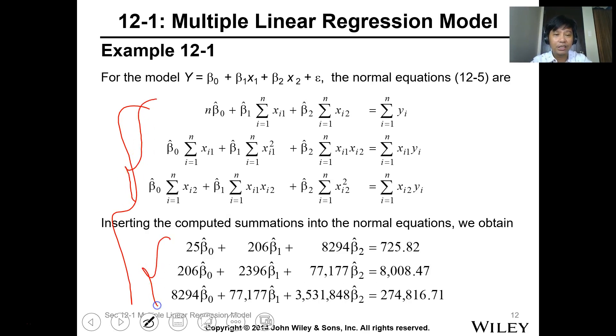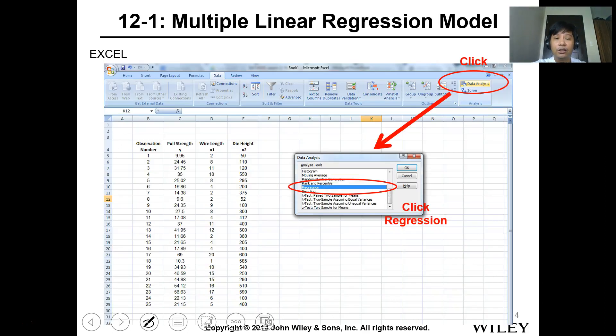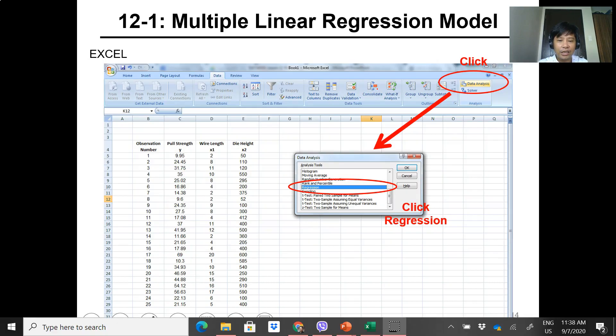You can input this into a programmable calculator, pero sa calculator I'm not sure with Casio, but I think there's no multiple regression in calculator. I'm not sure with Sharp and others, but we can utilize Excel to determine this value. Basically, you get the sum of this, the sum of that, the sum of y, et cetera. But you don't need to do this when we have Excel.